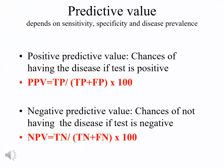I will now return to the predictive value of the test. The positive predictive value means the chance of having the disease if you do a test and the test is positive. It is mathematically defined as the ratio of the true positives divided by all the positives — which means the true positives and the false positives.